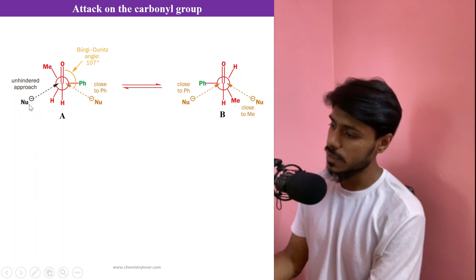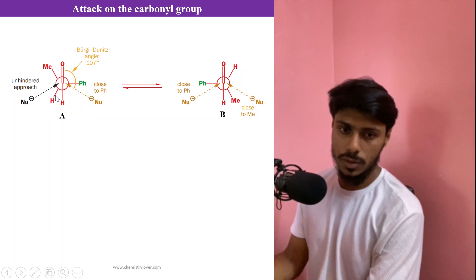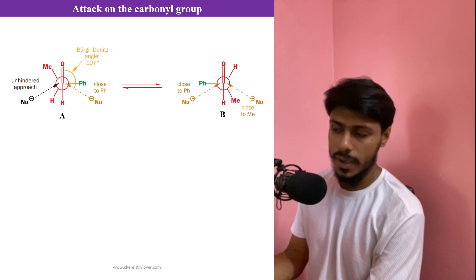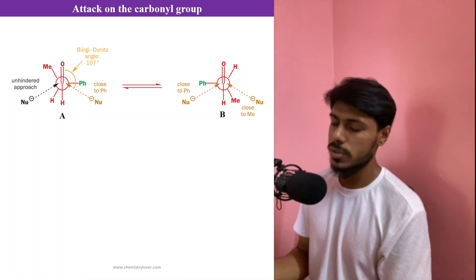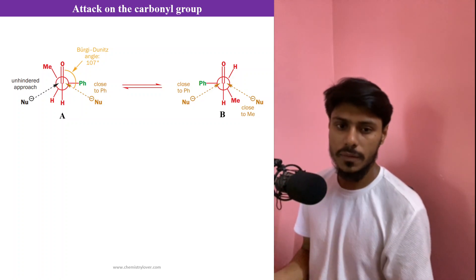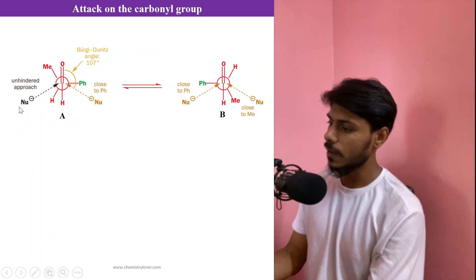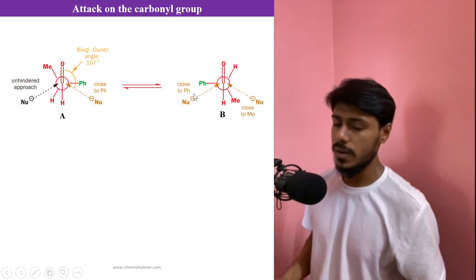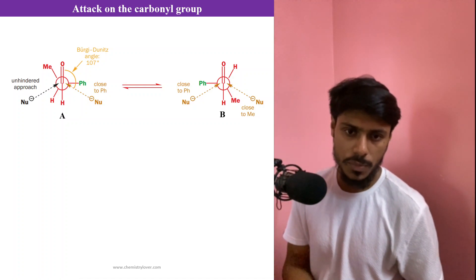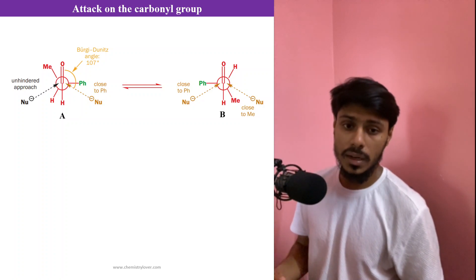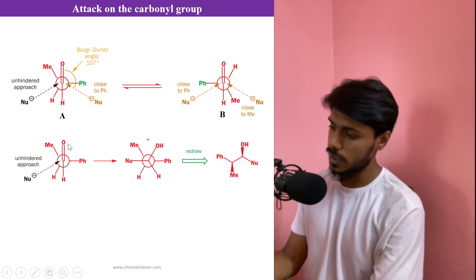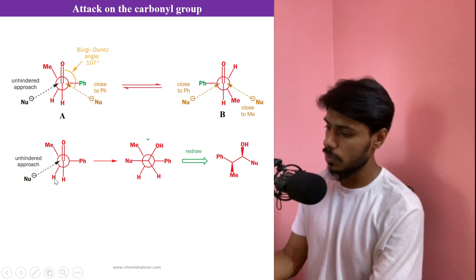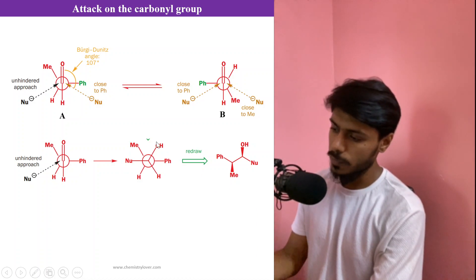For conformation A, attack from the right-hand side is sterically hindered by the phenyl group, but attack from the left-hand side is perfectly fine because only a small hydrogen atom is there — no steric hindrance at all. All attacks follow the Bürgi-Dunitz angle of 107 degrees; I made a video on that which you can check. So we conclude that attack from the left side of conformation A is the only viable pathway.